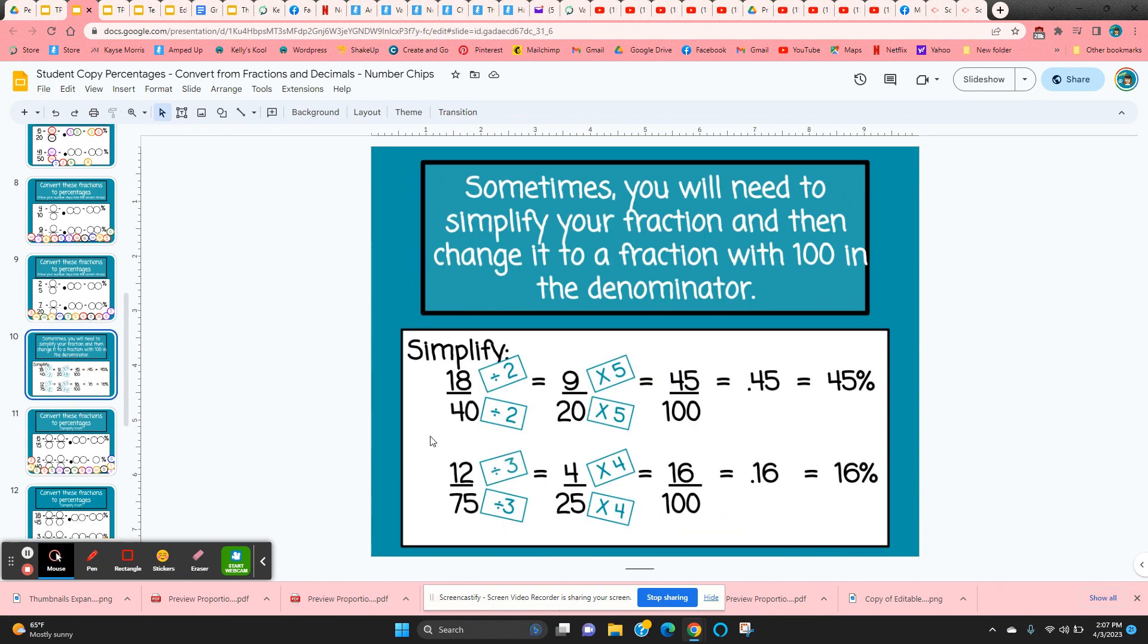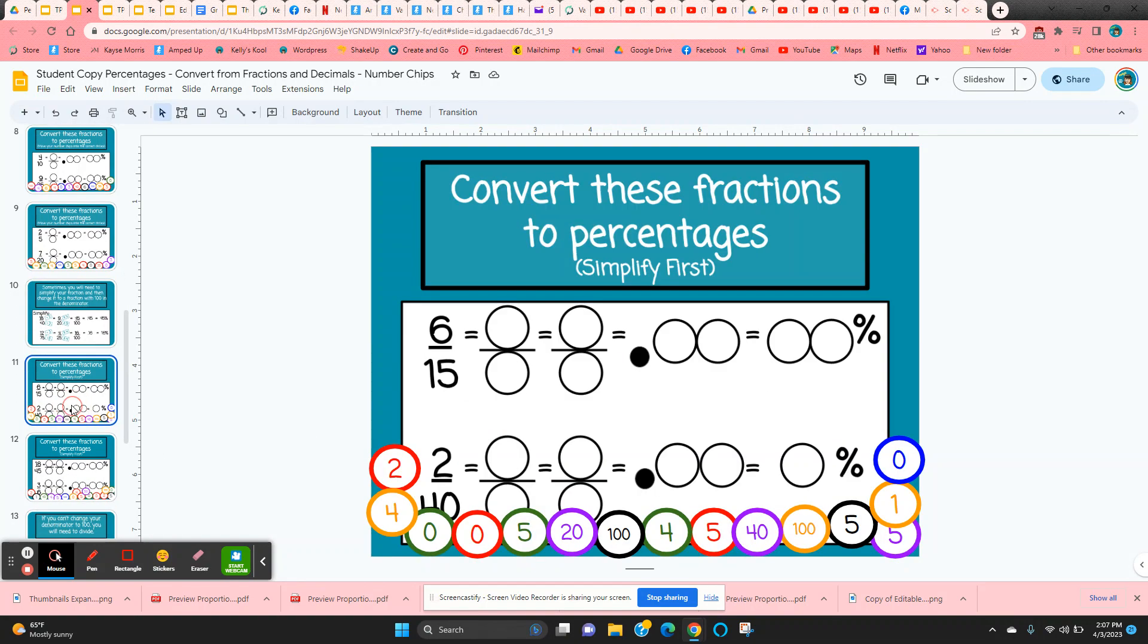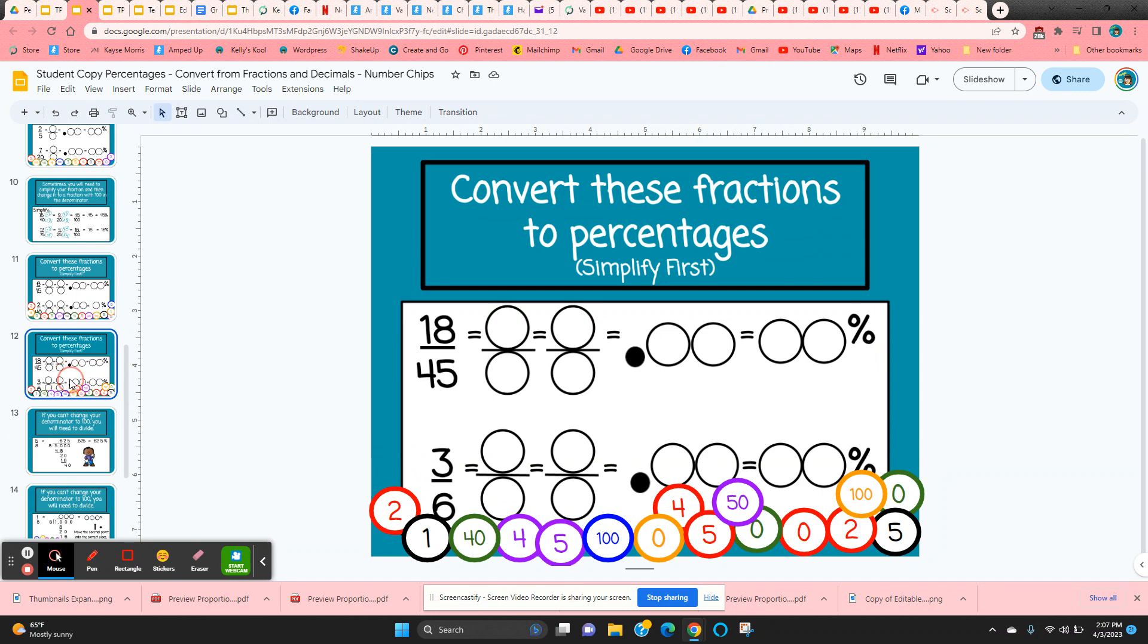Now on slide 10, it shows them that sometimes they can't convert it directly to 100 in the denominator. They may need to simplify their fraction first. So in this case, 18 fortieths. If we simplify, then we get 9 twentieths, which we can convert into 100. Here are 12 seventy-fifths. If we divide by three, we get 4 twenty-fifths, which we can convert into 100. So the students are going to be given a couple of slides where they do that.